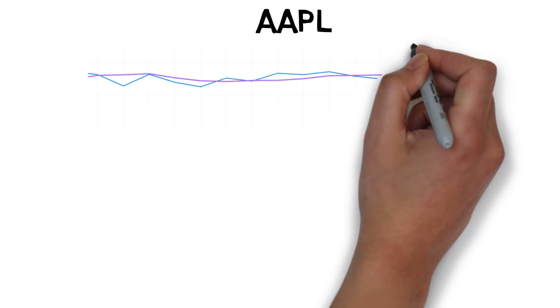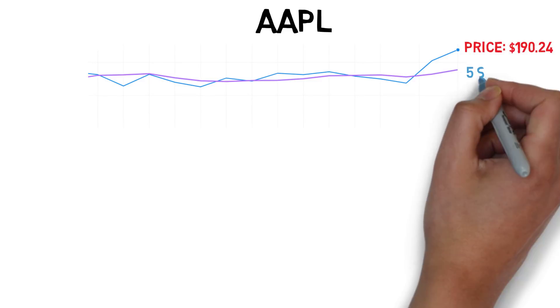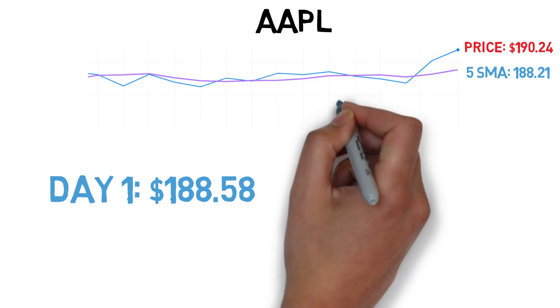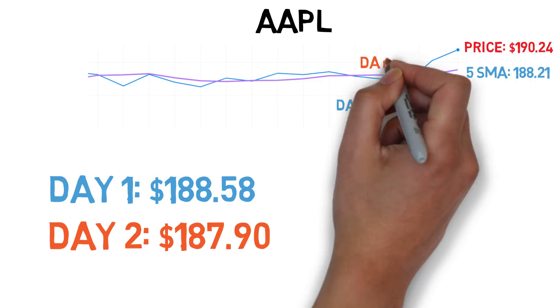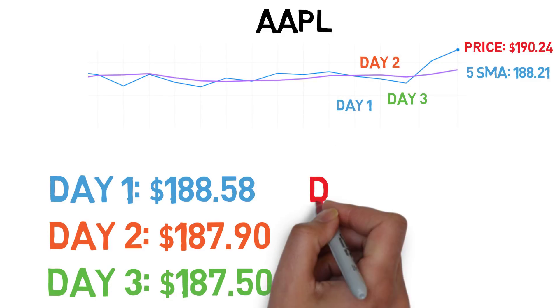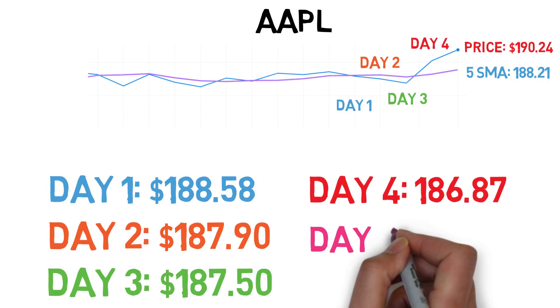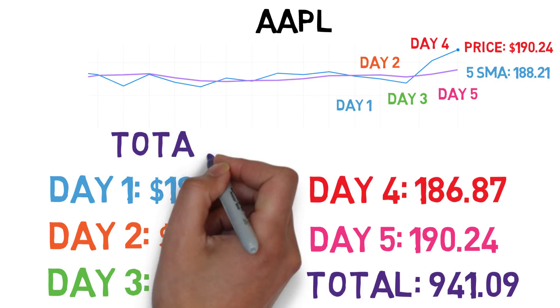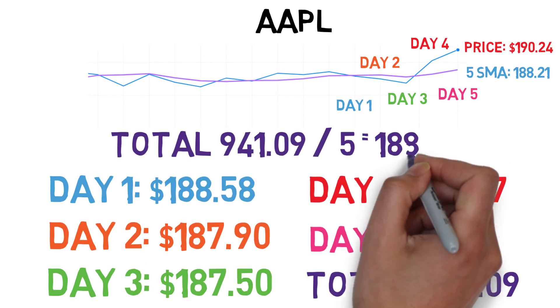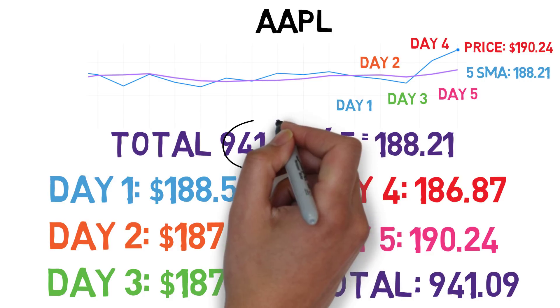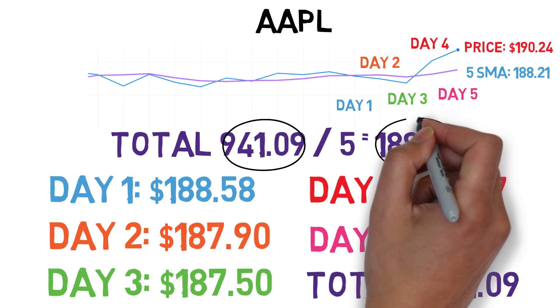Now let's calculate Apple's simple moving average using a 5-day average. These are Apple's real prices for the past 5 days. Five days ago it was $188.58, all the way up to $190.24 today. Adding all of the past 5 days of prices, we get $941.09. Dividing by 5 for the average, we get the newest moving average of $188.21.